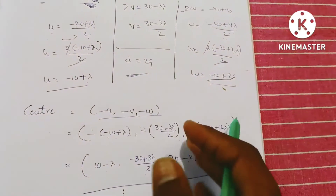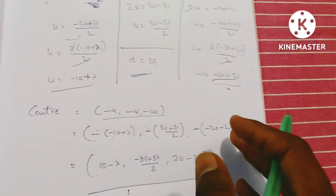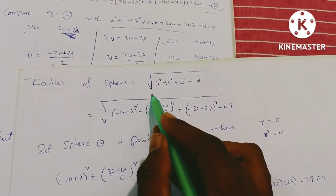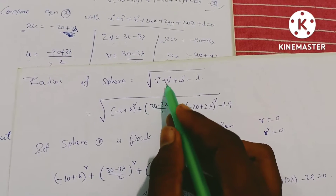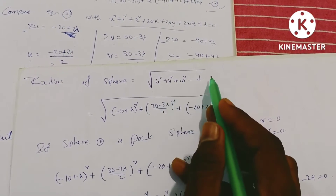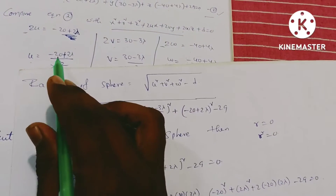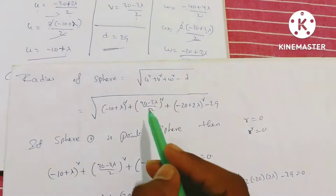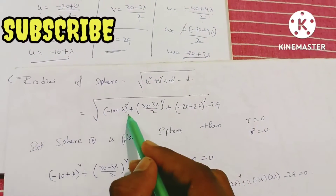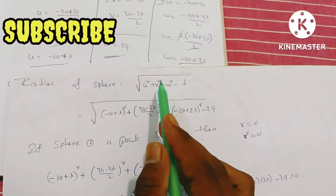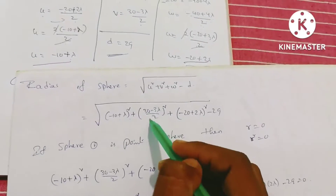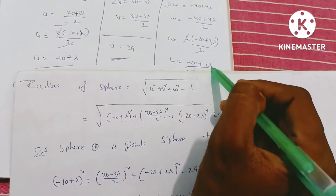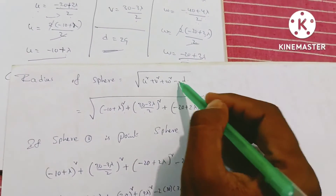The radius of the sphere equals √(U² + V² + W² − D). Substituting: U = −10 + λ, so U² = (−10 + λ)²; V = (30 − 3λ)/2, so V² = (30 − 3λ)²/4; W = −20 + 2λ, so W² = (−20 + 2λ)²; and D = 29.